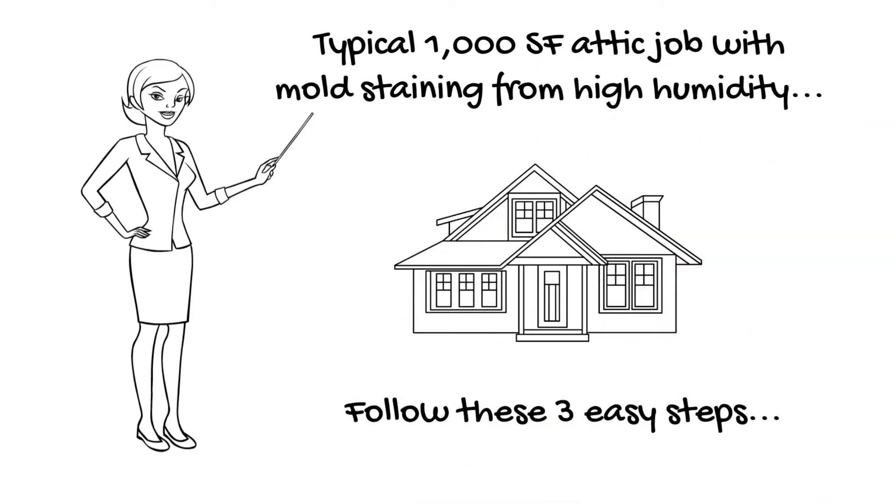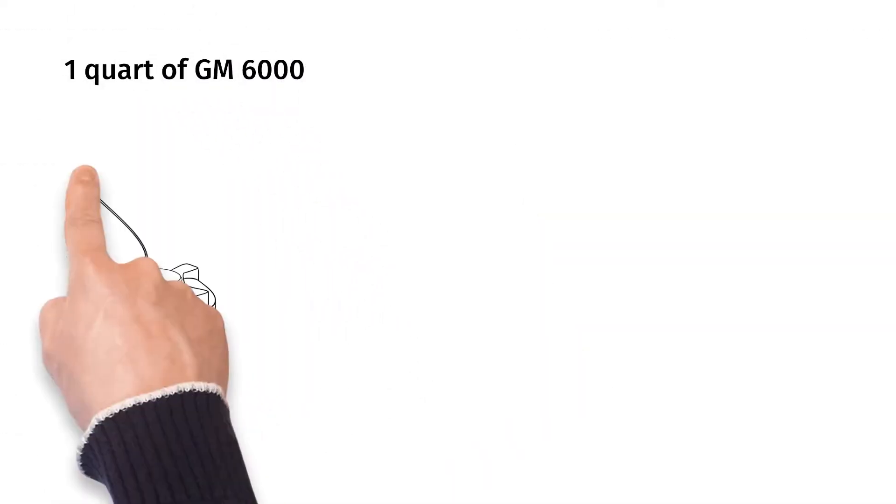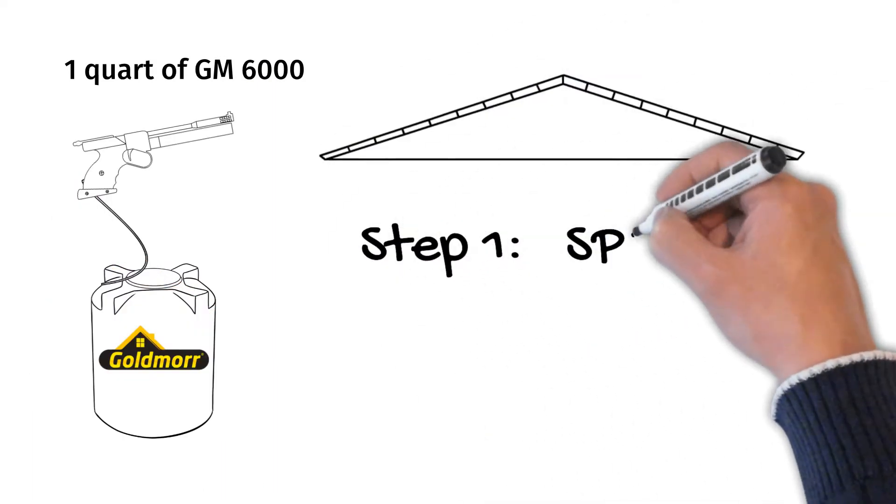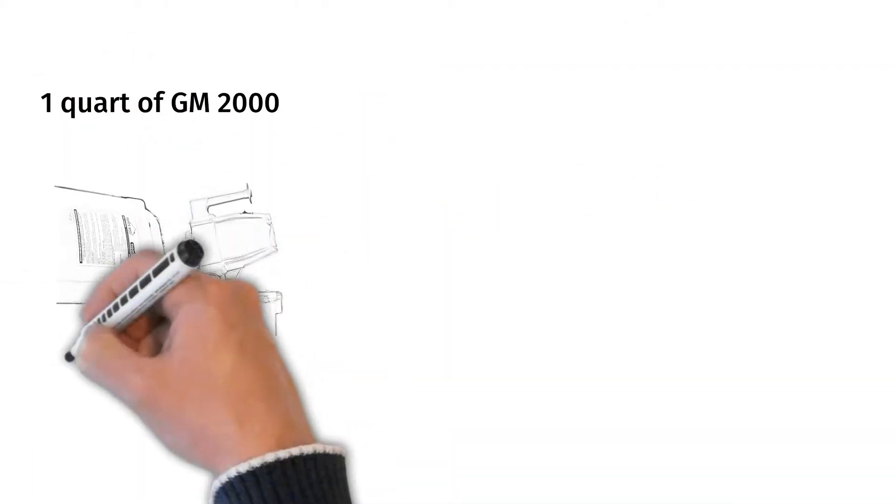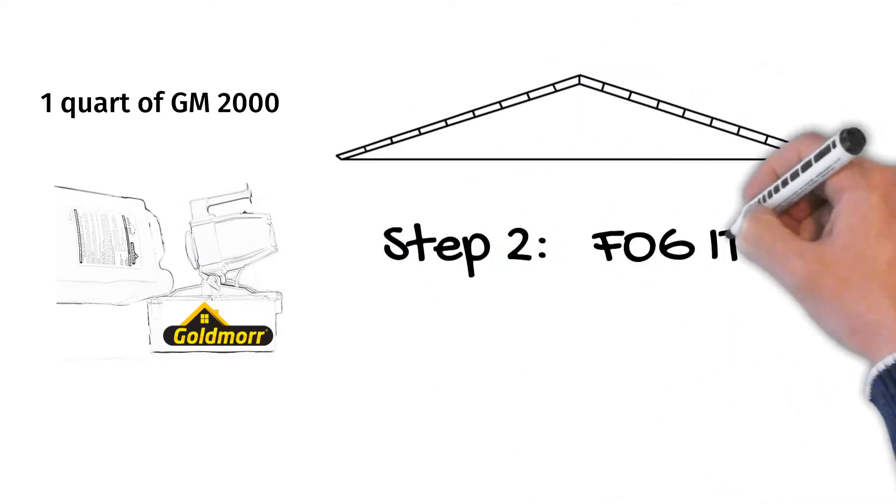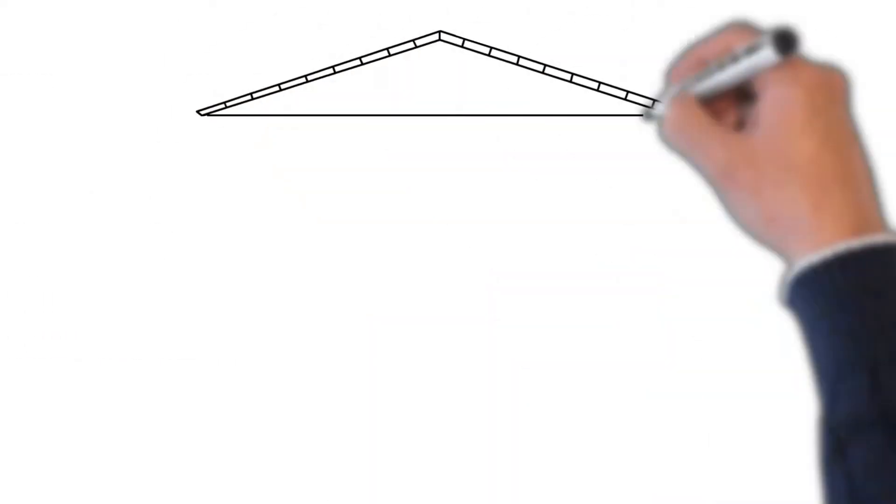Follow these three easy steps. With one quart of GM 6,000, step one, spray it. With one quart of GM 2,000, step two, fog it. Step three, clear it.